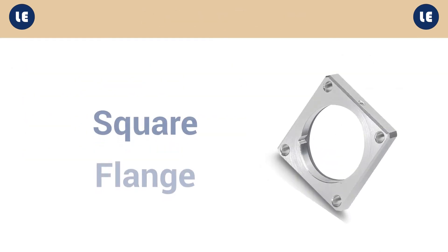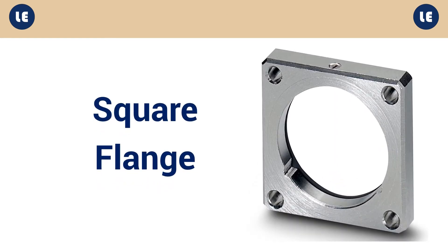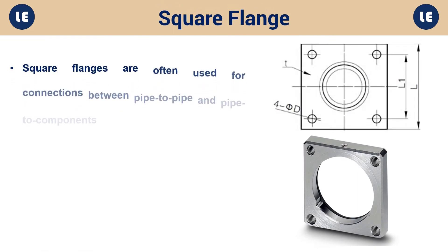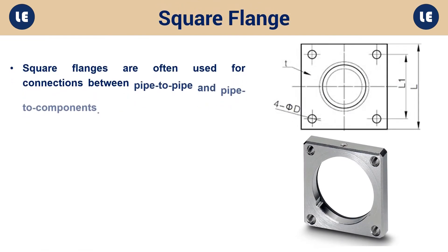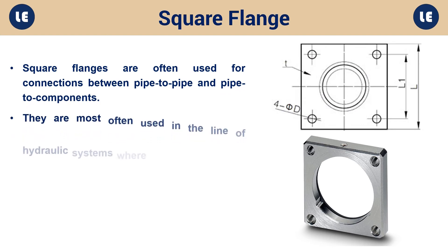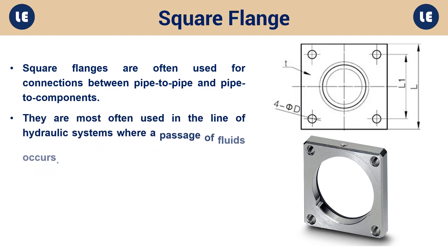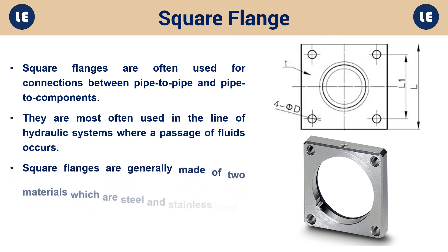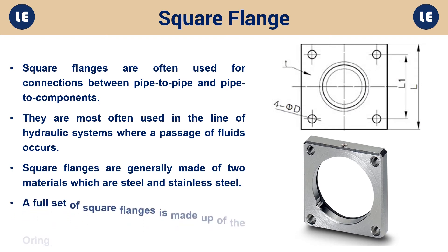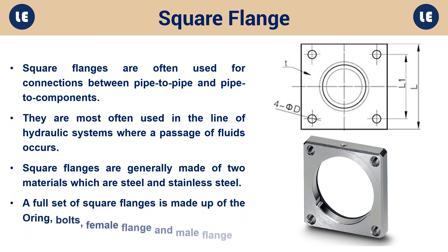Square flange: Square flanges are often used for connections between pipe to pipe and pipe to components. They are most often used in hydraulic systems where a passage of fluids occurs. Square flanges are generally made of steel and stainless steel. A full set of square flanges is made up of the O-ring, bolts, female flange, and male flange.